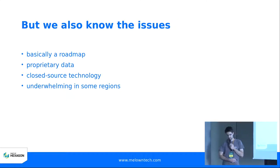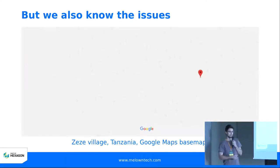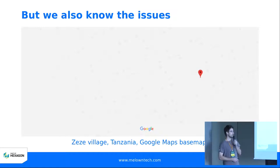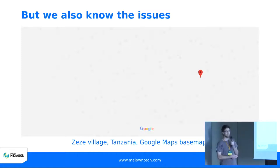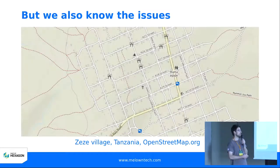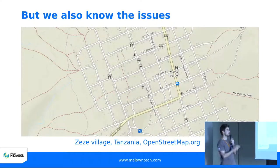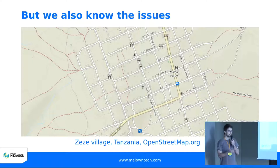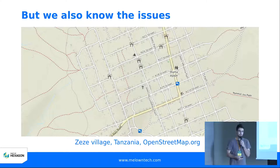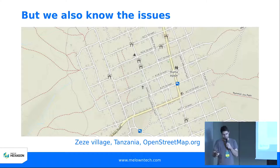If you were at last year's FOSS4G in Dar es Salaam, you may remember there were some projects regarding this particular village. This is Zeze village in rural Tanzania depicted on the Google Maps base map — you can see nothing basically, no useful map information whatsoever. But when you look at the same place on OpenStreetMap, it's pretty rich — you get streets, features, street names and so on. So why doesn't Google use OpenStreetMap? When will Google mirror this information? We have no way to push it.